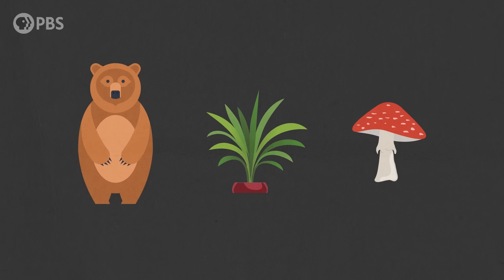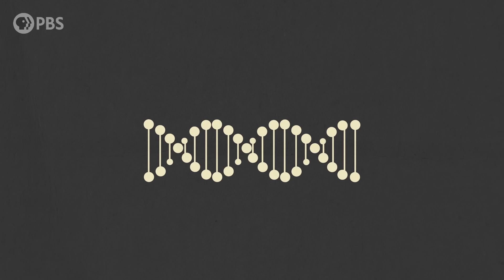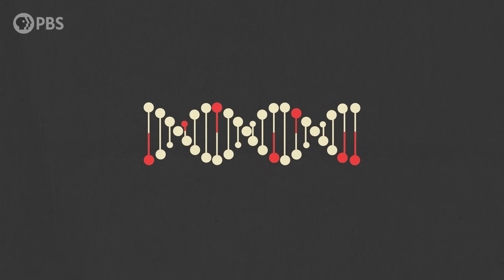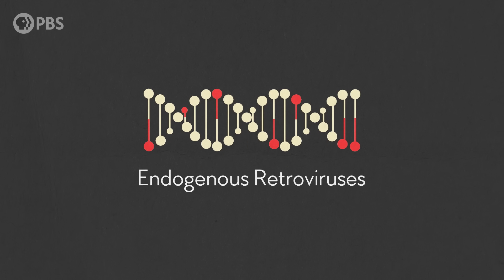Whether they're animals, plants, or fungi, all living organisms have at least one thing in common. Their DNA is riddled with the remains of ancient viruses. And humans are no exception. These viral leftovers are known as endogenous retroviruses, or ERVs. And most of them are the remnants of ancient retroviruses that infected the egg or sperm cells of our mammal ancestors.